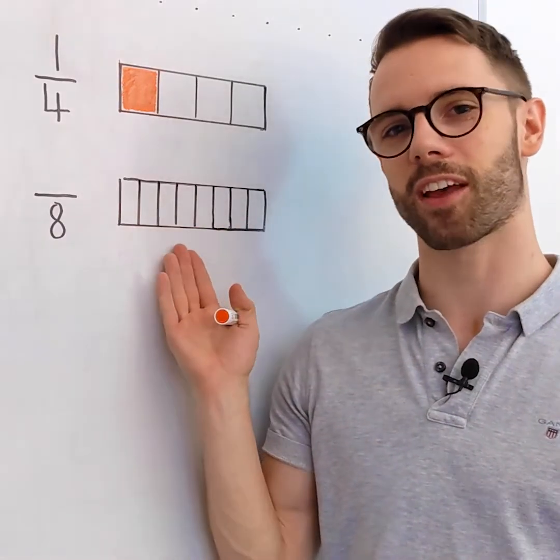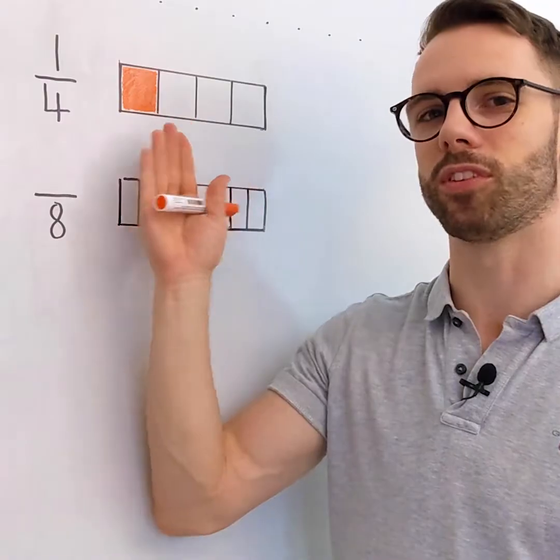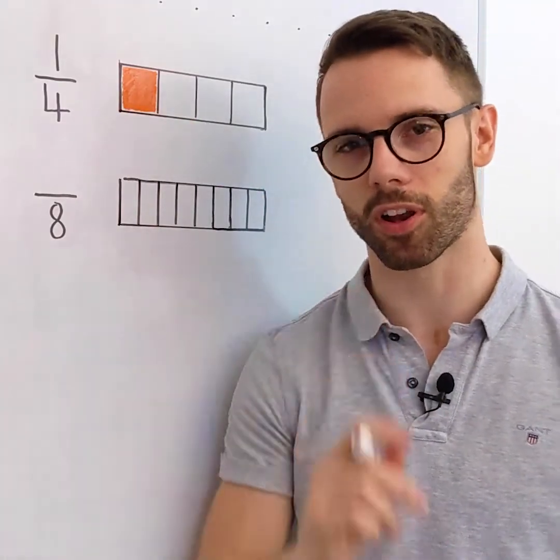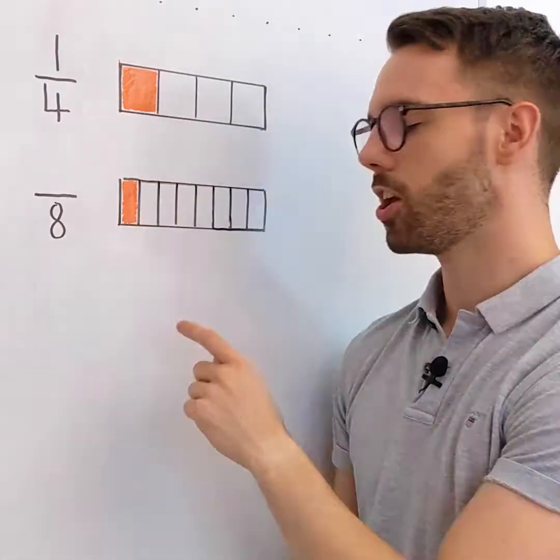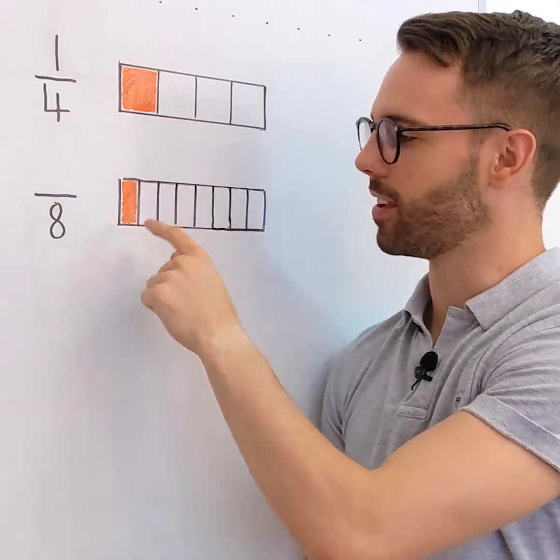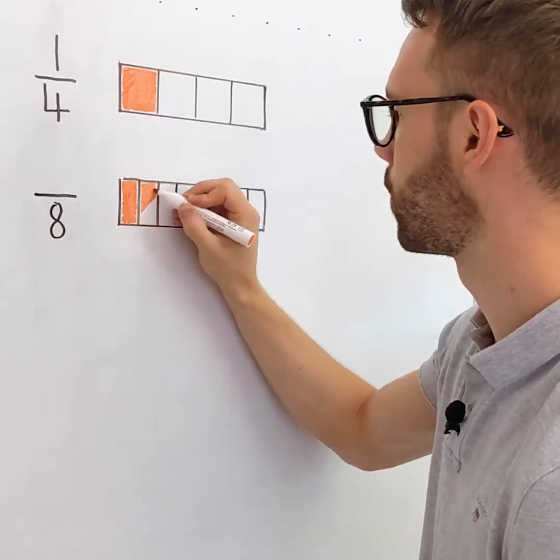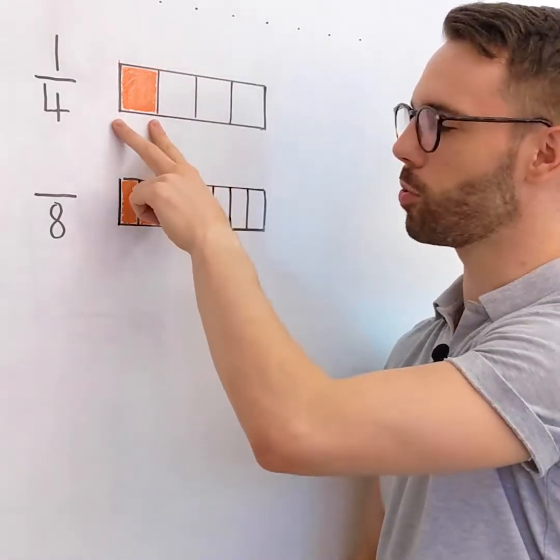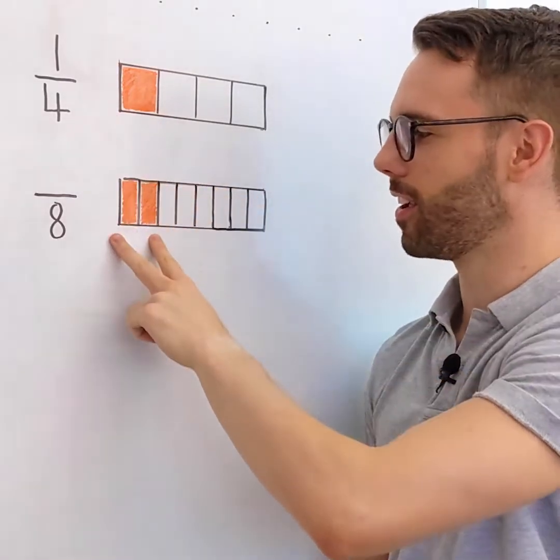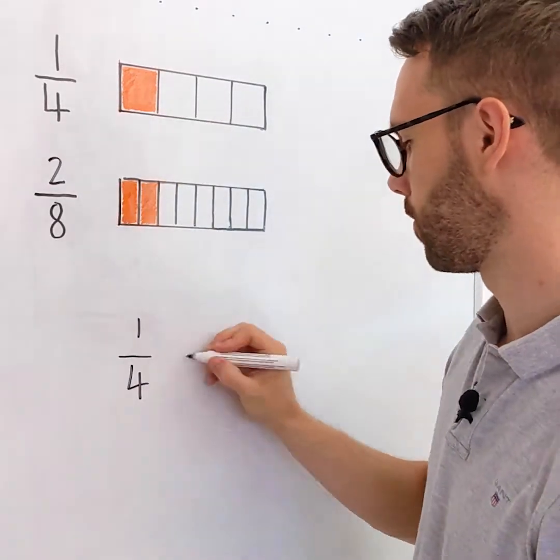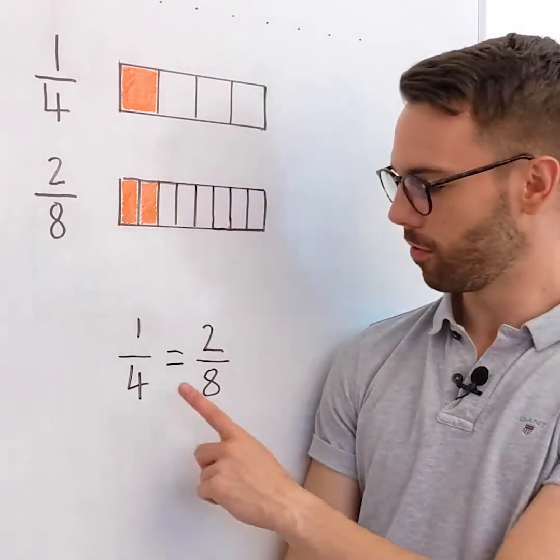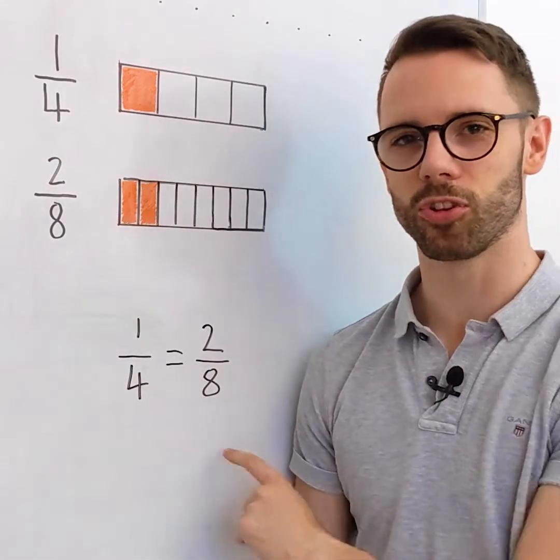We can use this diagram to calculate how many eighths are equivalent to one quarter. So I'll colour in one eighth. You can see that one eighth is smaller than one quarter so let's colour in two eighths. You can now see that one quarter has the same value as two eighths. So therefore one quarter equals two eighths.